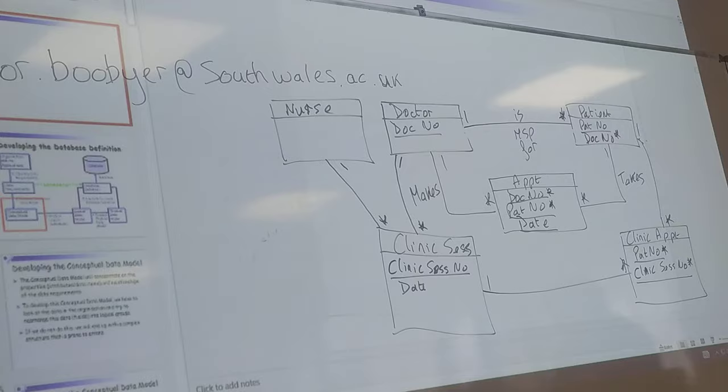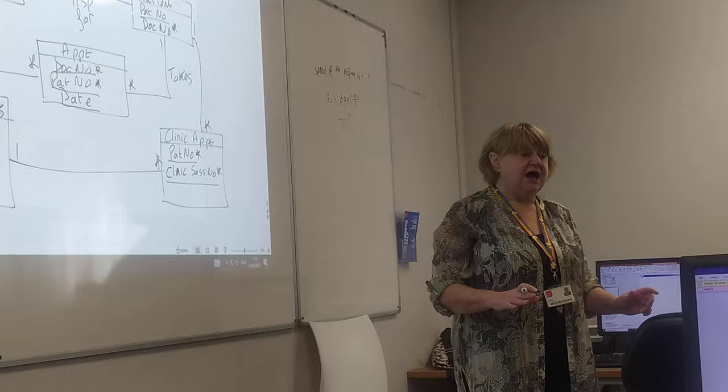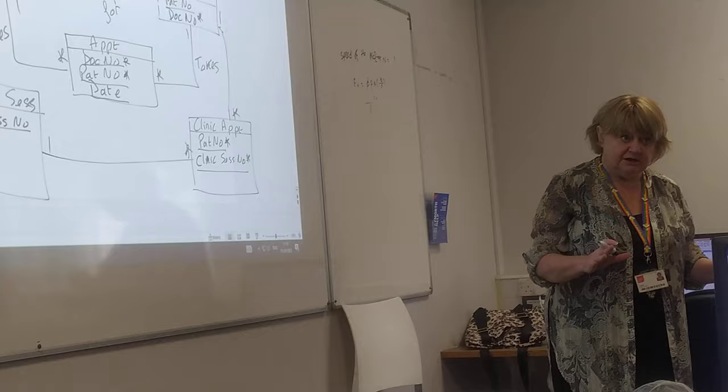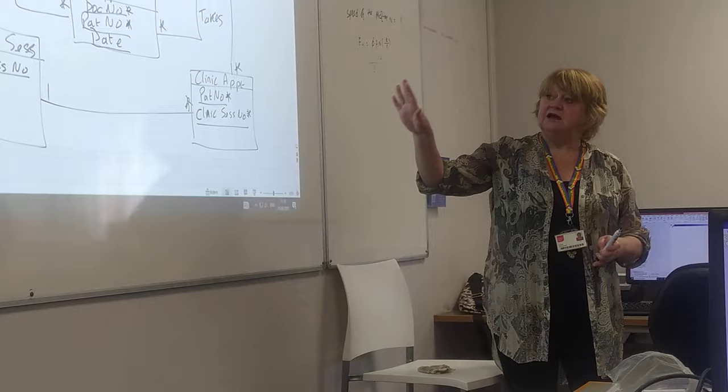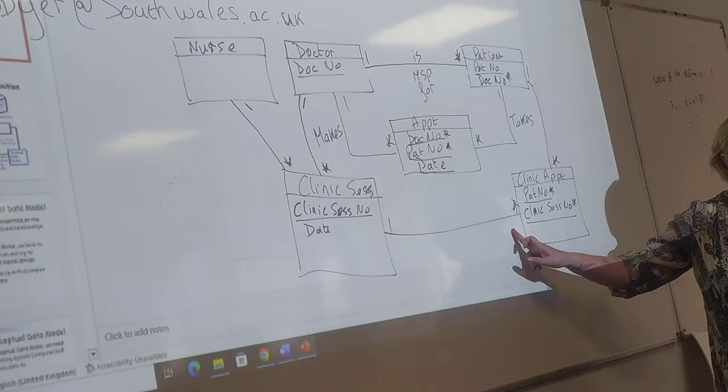This can be organised a bit more elegantly, and next week I'll go through how that can be done. What we're going to do is use this entity relationship diagram and decide whether a relationship is optional or mandatory, so we're extending our model.